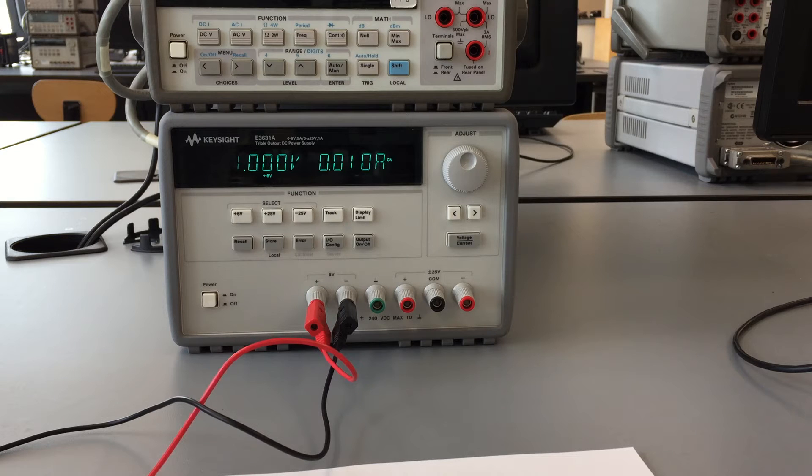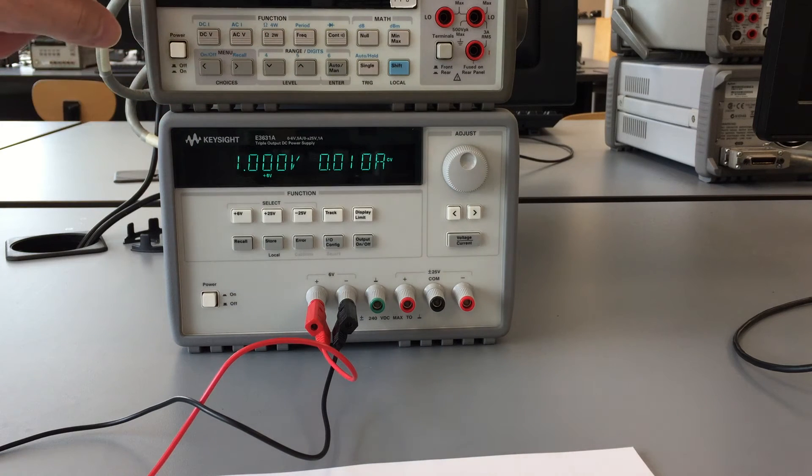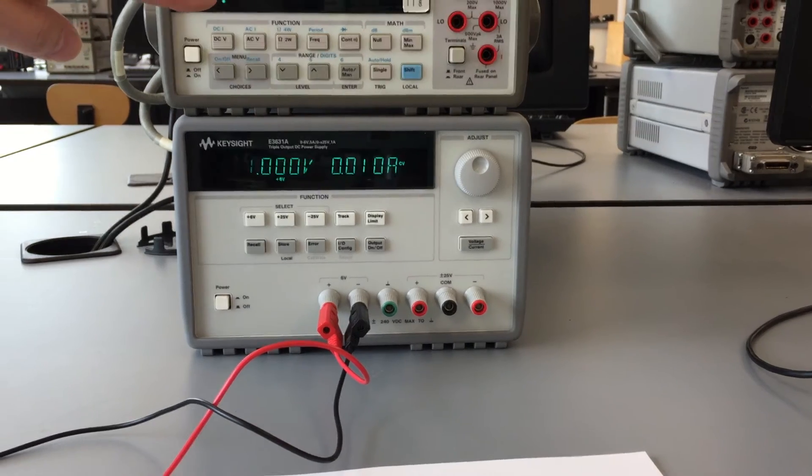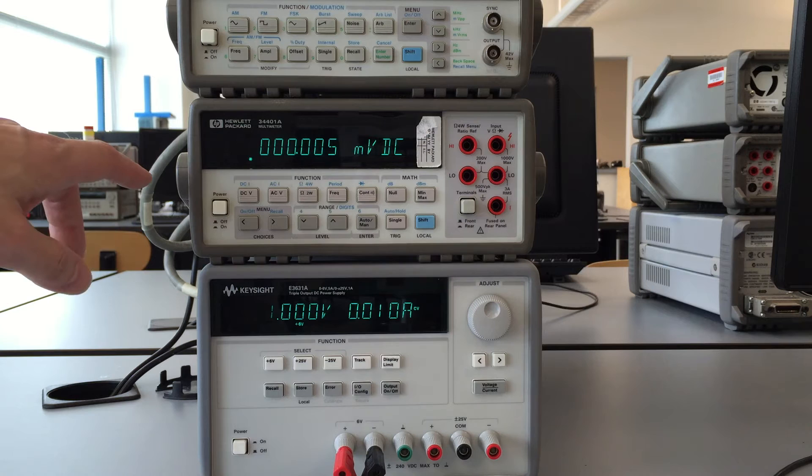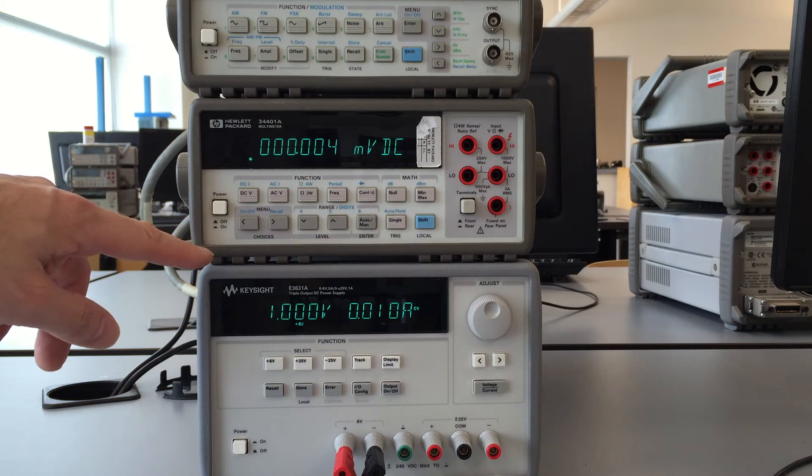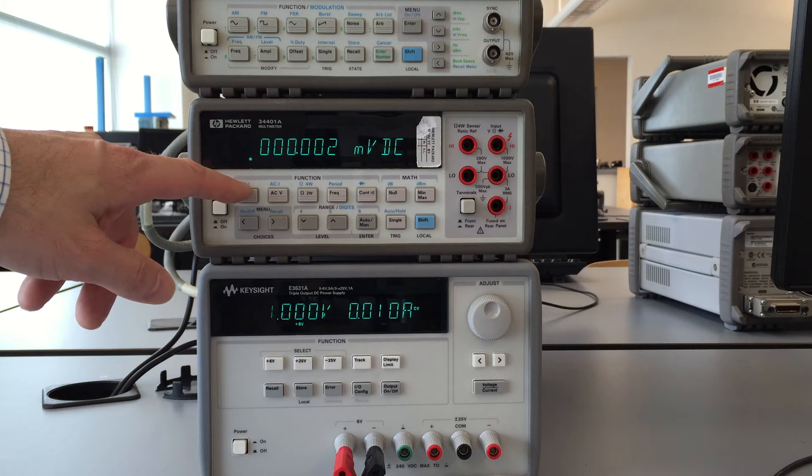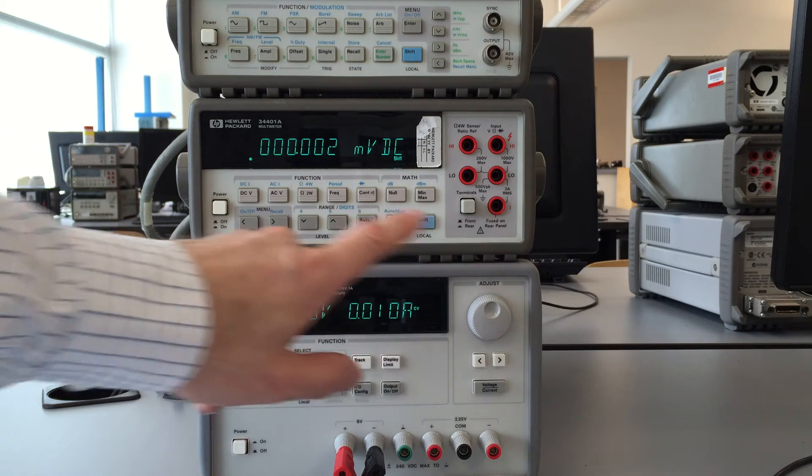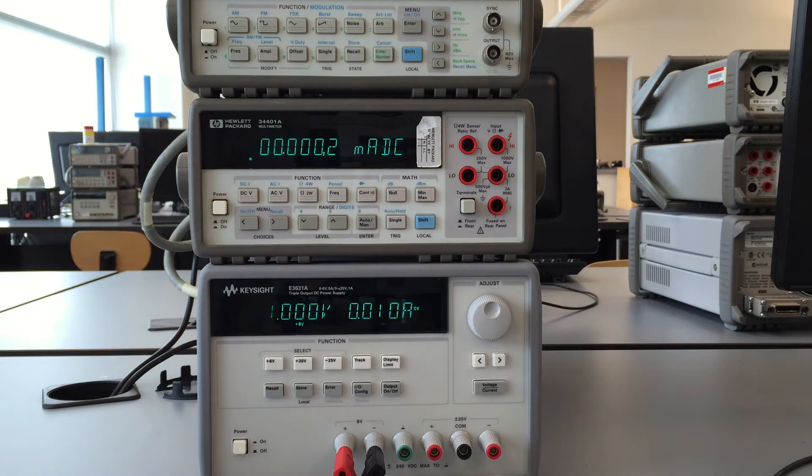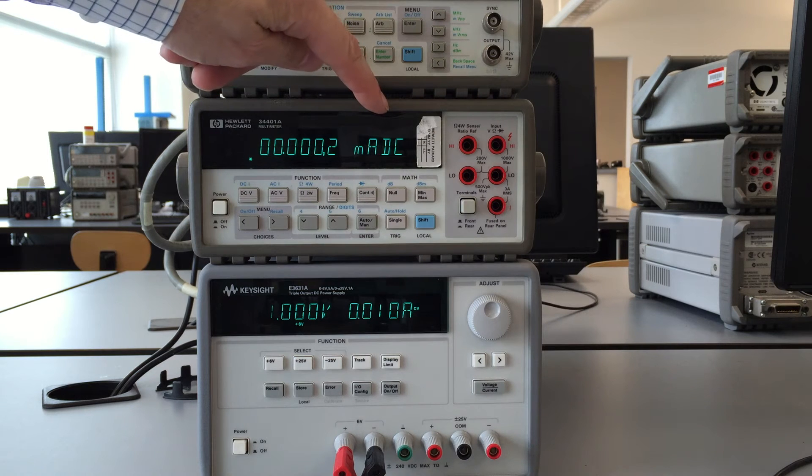But say the circuit that you're measuring doesn't have an ammeter built into it. You could use the multimeter up here to measure the current through the circuit. First thing you do is set the function to measure current. We use the DC current right there. In order to use the blue functions you need to press the shift button. So we press the shift button and now we're in current measuring mode. It's saying that we're measuring milliamps DC on the meter.